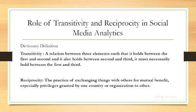For a real-life example: if A is a brother of B and C is a brother of B, then A and C are also brothers. I hope the basic meaning of transitivity is clear. Our second term is reciprocity, defined as the practice of exchanging things with others for mutual benefit, especially privileges granted by one country or organization to another. This is the dictionary definition of reciprocity.